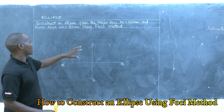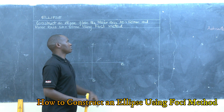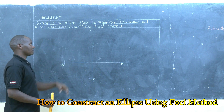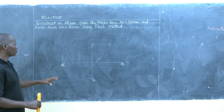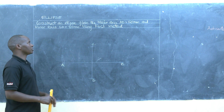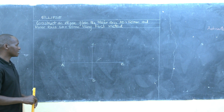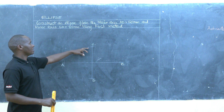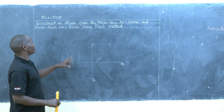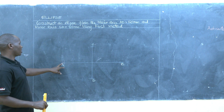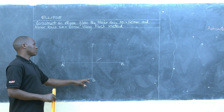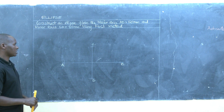For this case, our major axis AB is 120 mm and our minor axis CD is 80 mm. The first thing is to draw the two diameters — diameter AB to denote the major axis, equivalent to 120 mm, and minor axis CD, equivalent to 80 mm.